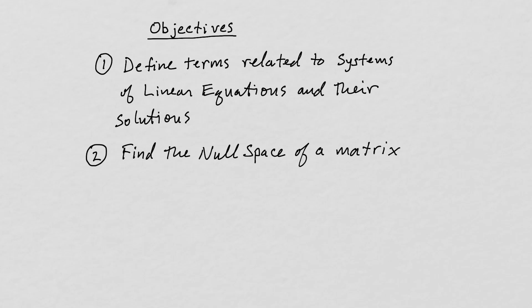This is the second video on systems of linear equations. We have two objectives: we're going to define some more terms, and then we're going to find the null space of a matrix. It may seem a little tedious to spend so much time defining terms, but definitions are really important, especially in linear algebra, because we use the definitions when we are proving theorems and solving problems.